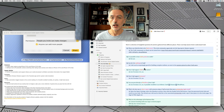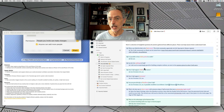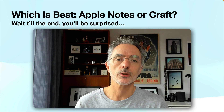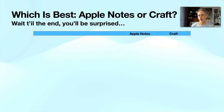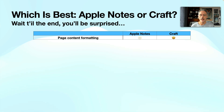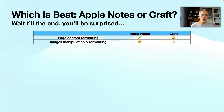In the next section, I'll highlight the major strengths of each application and see which one is better. Using this comparison table for Apple Notes and Kraft: from a page content formatting point of view, Kraft is way better than Apple Notes, as you saw in the previous examples — Kraft allows for very rich content formatting. Images manipulation and formatting is also better in Kraft.